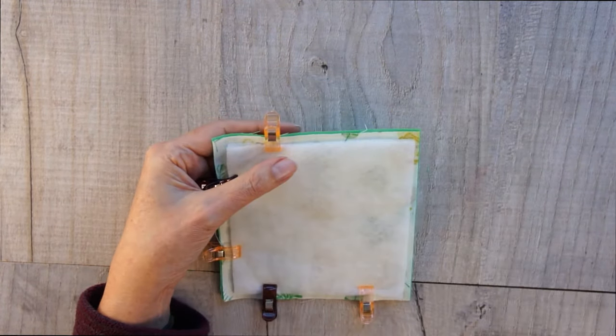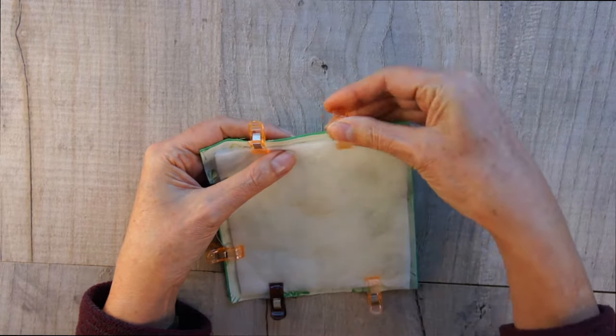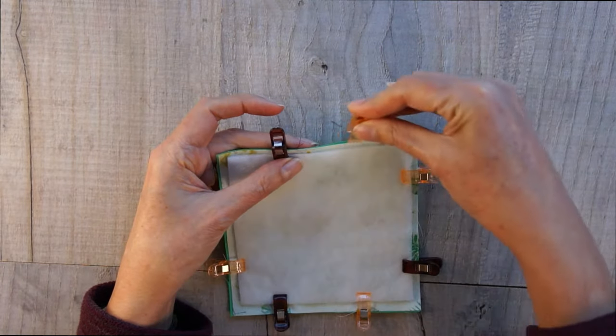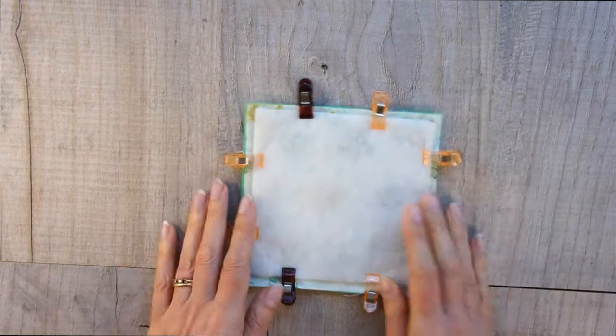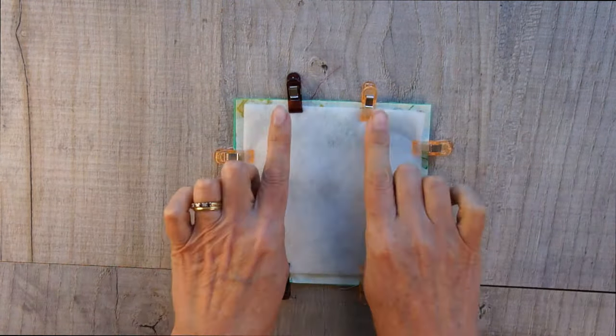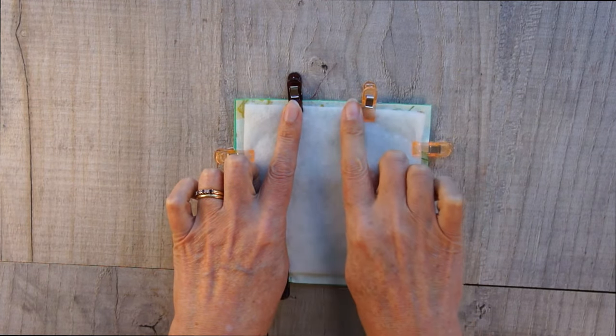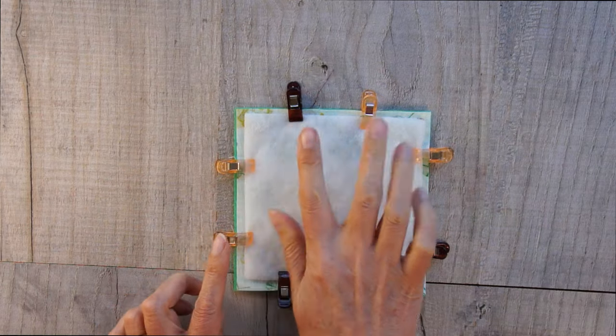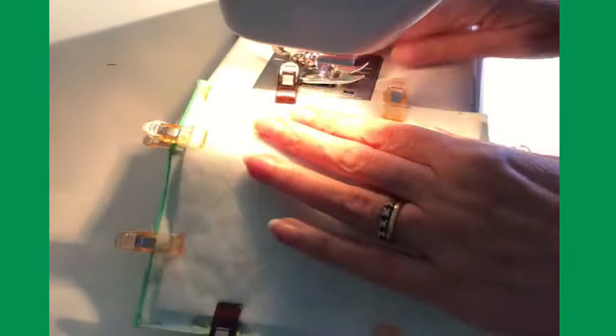And, I recommend whilst you're pinning that you mark which side you're going to leave your opening on. Because one side you're not going to sew all the way around. You're going to leave a gap to turn your mat the right side out. So, I'm going to use that edge and sew around the others. So, then take it over to your machine.